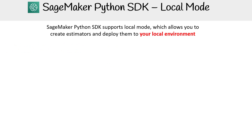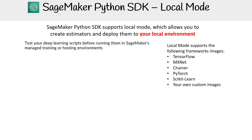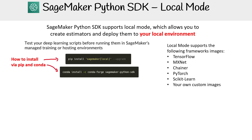The SageMaker Python SDK supports local mode, which allows you to create estimators and deploy them to your local environment. Local mode supports the following framework images: TensorFlow, MXNet, Chainer, PyTorch, Scikit-learn, or your own custom images. This lets you test your deep learning scripts before running them in SageMaker's managed training or hosting environments. I tried getting local mode to work but never got it working exactly, though it is there and supposedly you can utilize it.